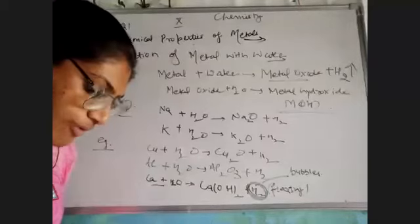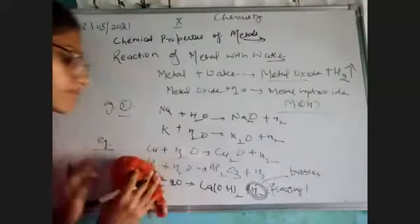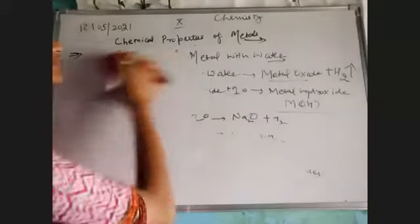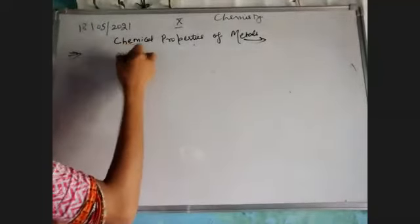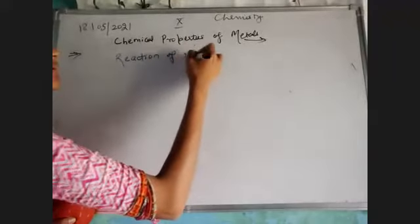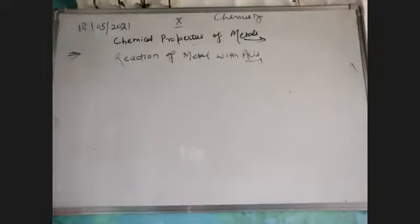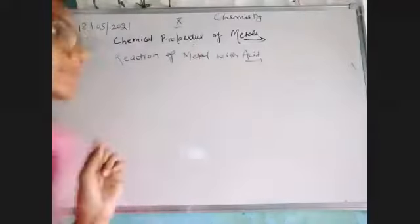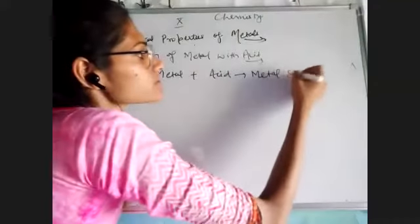Now let's move to our next topic: what happens when metal reacts with acid? Whenever we react a metal with acid, there is formation of a salt along with hydrogen gas. The general reaction is: metal plus any acid gives metal salt plus hydrogen.